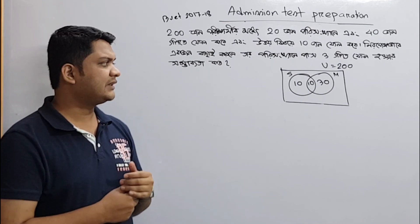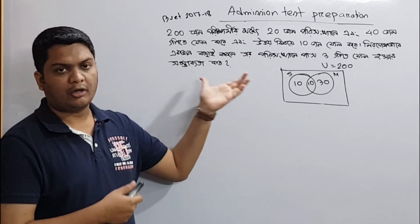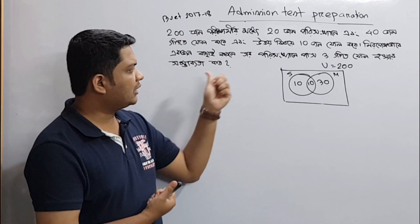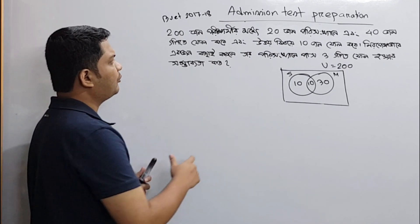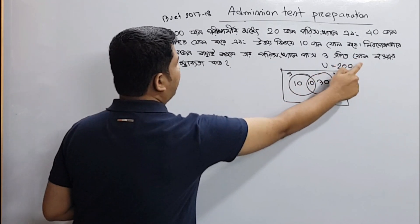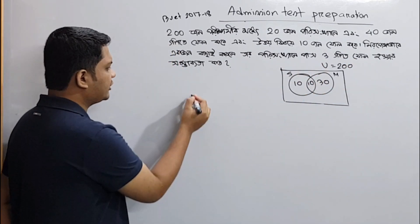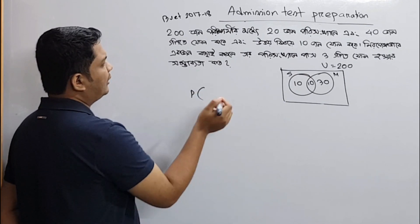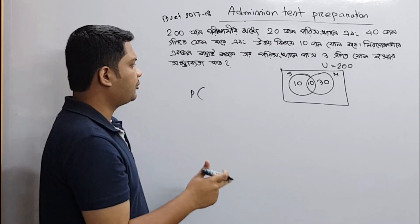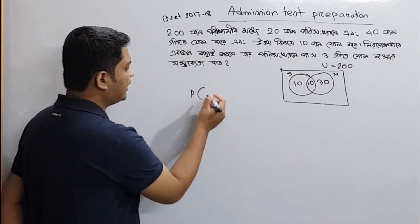you can find the same skills, and you can find the same skills. So, this problem will be solved. So, the probability of S is a failure. So, probability of S's statistics is a failure. So, probability of S is a failure. 1,